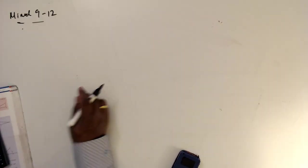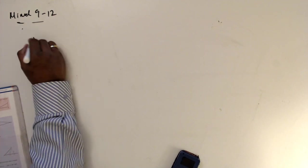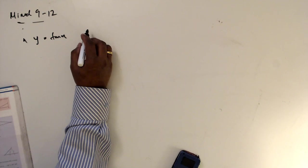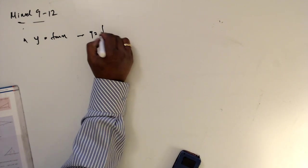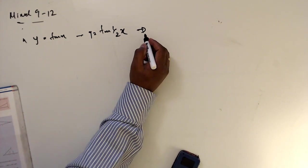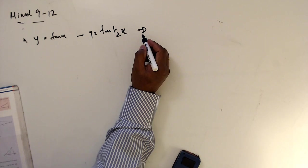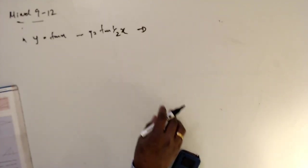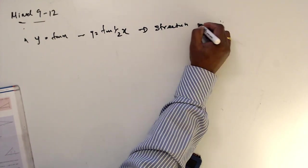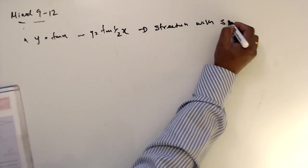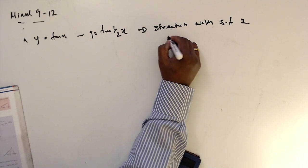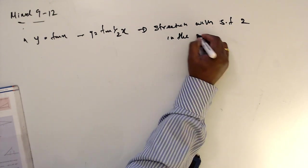Question number 12, part a: y equals tan x transforms into y equals tan(x/2). We have to explain this transformation. This is a stretch with a scale factor of 2 in the x-direction.